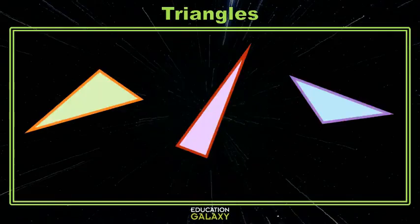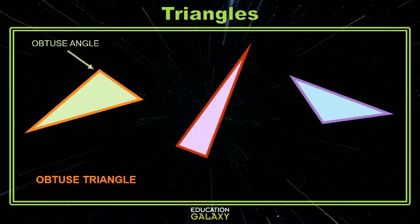Let's look at this group here. Take a look. How about this first one on the left? It has an obtuse angle, so it's called an obtuse triangle. Good job.